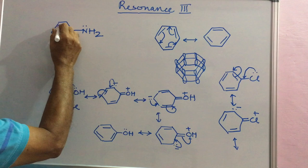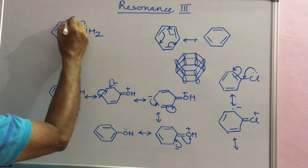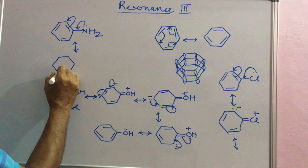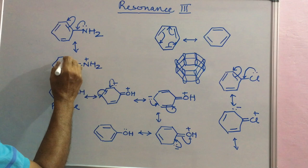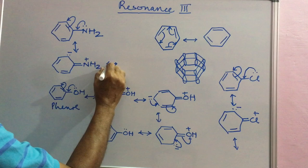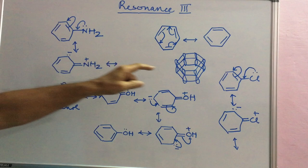Electron pair coming here. Plus charge here. Electron pair. And three more similar structures. So whenever there is an electron pair here, you will write structures of this type.